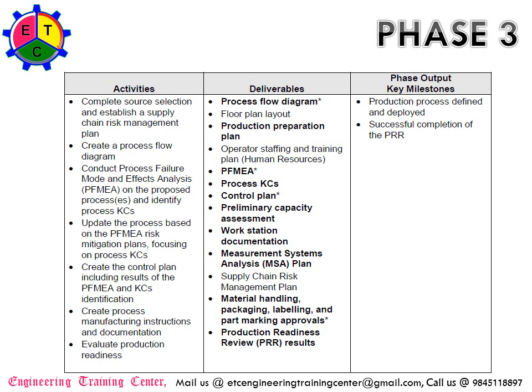These are very important activities. We will be dealing with these in detail in upcoming videos, so I will only touch on them at a high level here to give you an overview of what activities are done in Phase 3. You will create the control plan — how do you control the key characteristics — including results of the PFMEA and key characteristic identification, and create the manufacturing process instructions and documentation. After the CDR, you will be getting ready for the initial production phase and initial production trials, then evaluate production readiness.